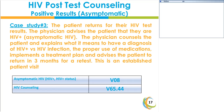Case Study 3: HIV post-test counseling with asymptomatic positive results. The same patient returns for their test results, and the physician advises the patient that they are HIV positive. The physician counsels the patient, explains what it means to have HIV positive versus the HIV infection, discusses the proper use of medications and treatment plan, and advises the patient to return in three months for a retest. Because the patient now has a confirmed diagnosis of HIV positive, the principal diagnosis is V08, and the counseling code V65.44 is the secondary diagnosis.